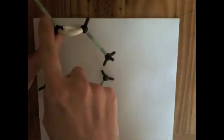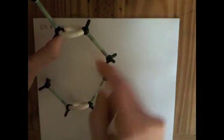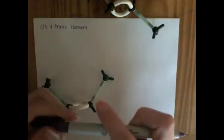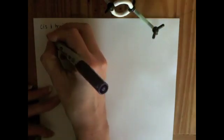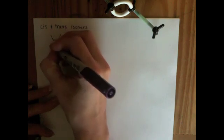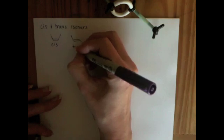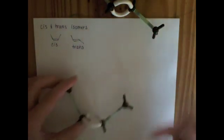When we have the carbon chain spanning across the double bond, we call that the trans-isomer. So this molecule is a cis-isomer, this molecule is the trans-isomer.